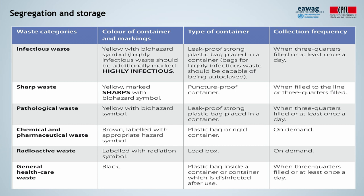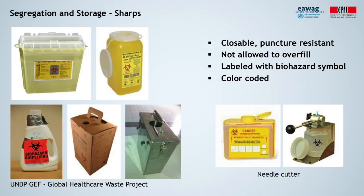Let us take one look at a specific case of sharps. Sharps is one fraction with a high risk, mostly for healthcare workers, waste workers, or sometimes even users of recycled injection equipment. Here are some examples of sharps containers. They must be closable, puncture resistant, and leak proof on the sides and on the bottom. They should be accessible, always maintained upright, and not allowed to overfill. Also, they should be labeled or color coded, even with a biohazardous symbol.